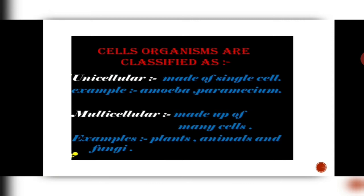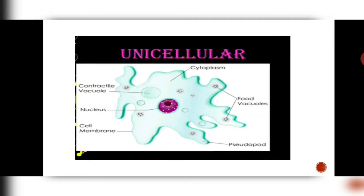If an organism is made up of a single cell, then it is known as a unicellular organism. For example, amoeba and paramecium are unicellular. Multicellular organisms, as you all know, have many cells — like plants, animals, fungi. We are all examples of multicellular organisms.